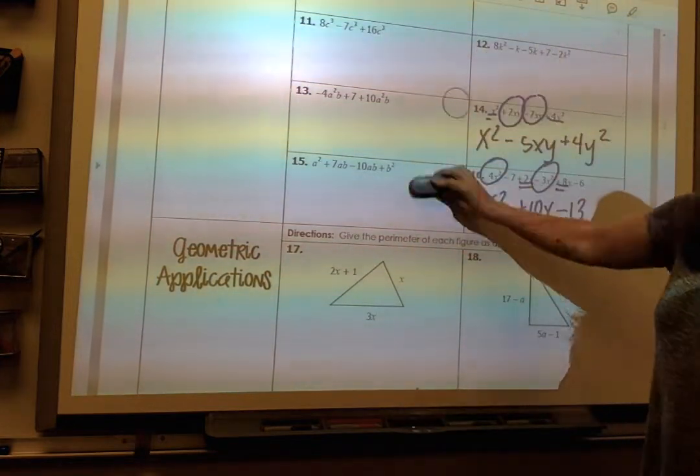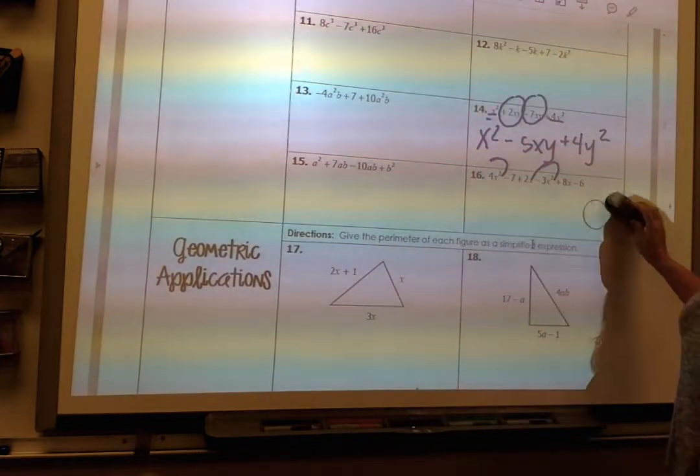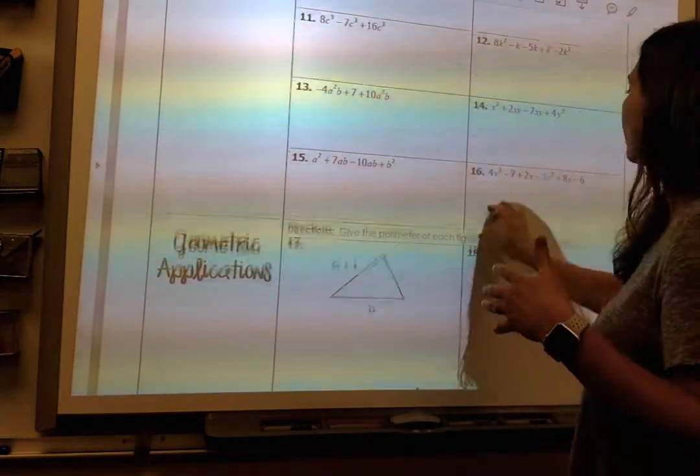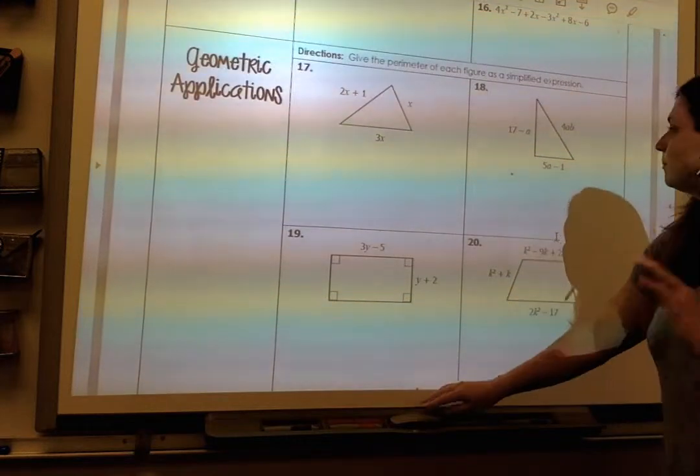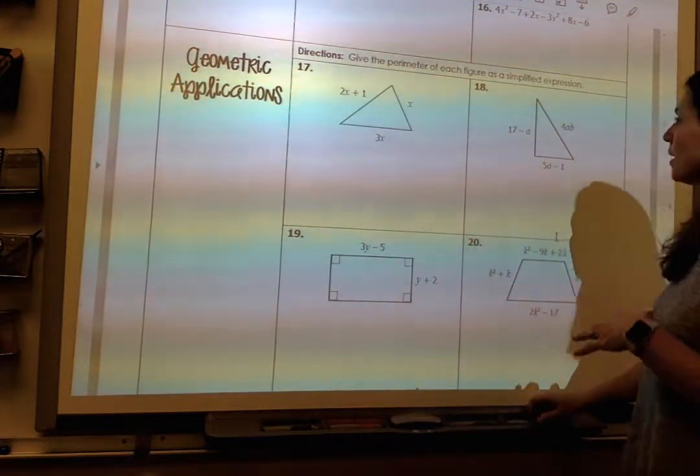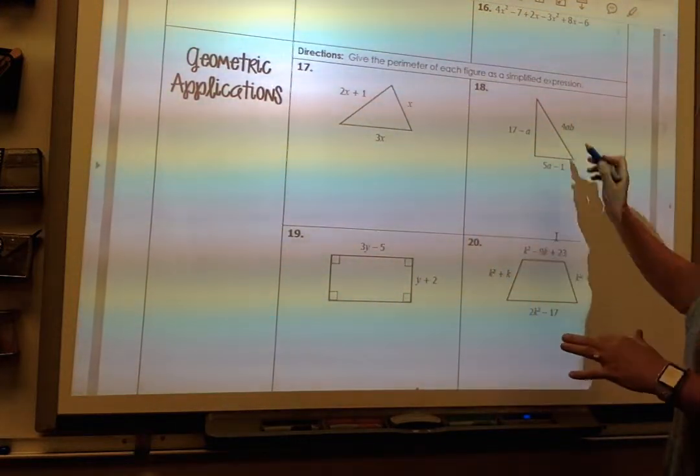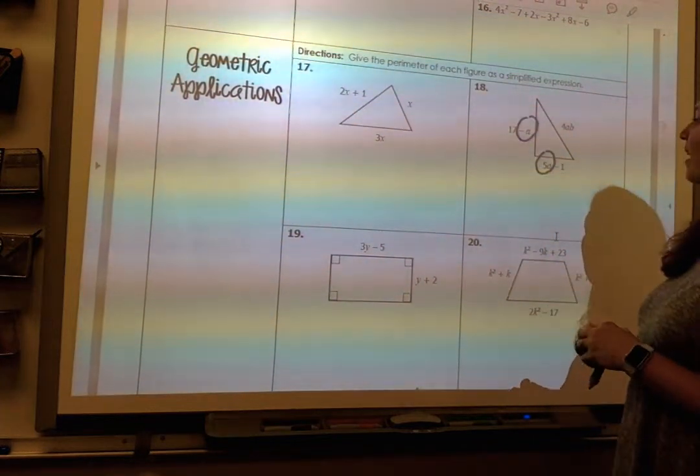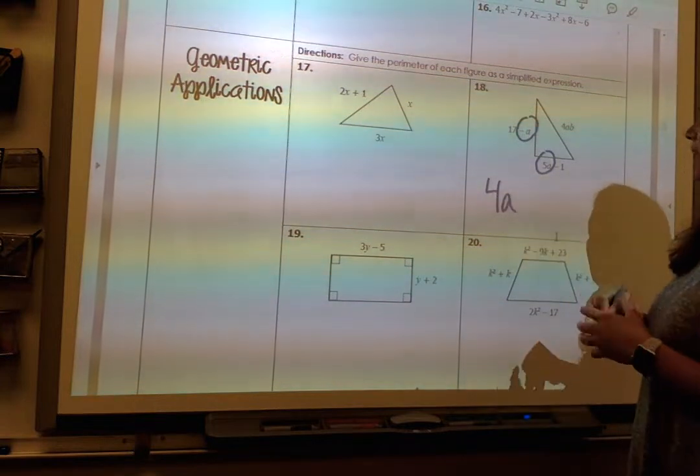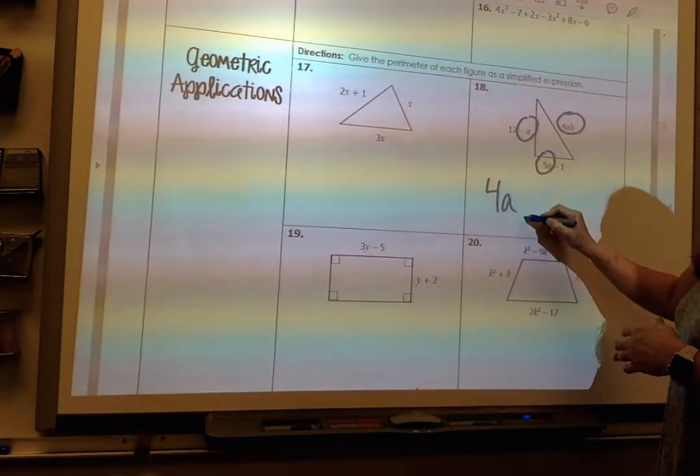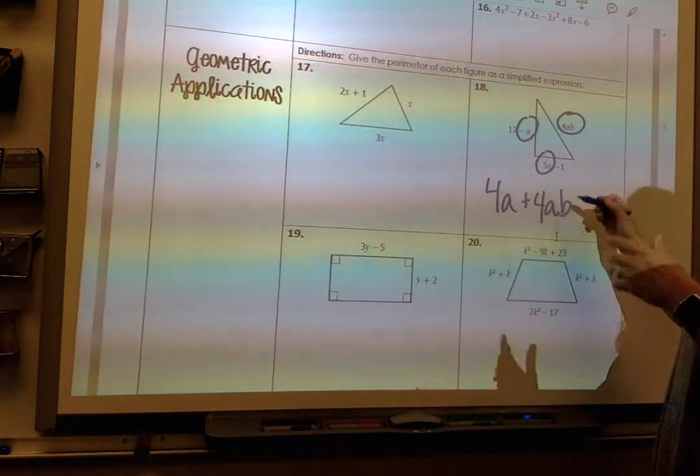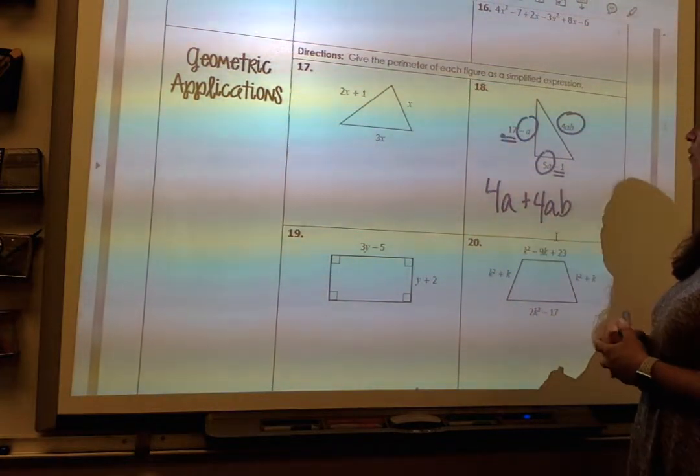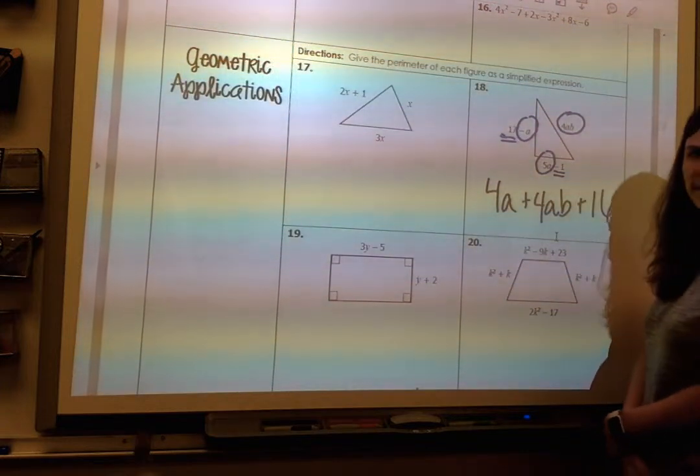Now, number 18, when I look for the perimeter, remember, perimeter is just distance around the sides of a shape, right? It's distance around. So if I look at number 18, I'm going to combine all my like terms because it's the distance around here. So I've got this negative a and I have this 5a. That combines to be 4a. Then I have 4ab, which stands alone. He can't be combined with anybody. And then I've got this constant term 17 and negative 1 to add to 16.